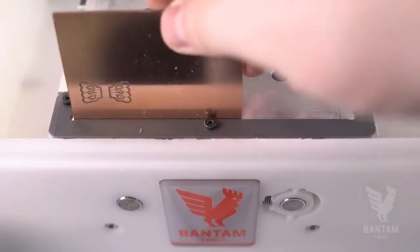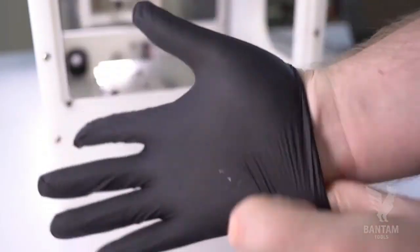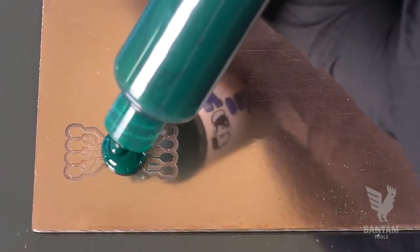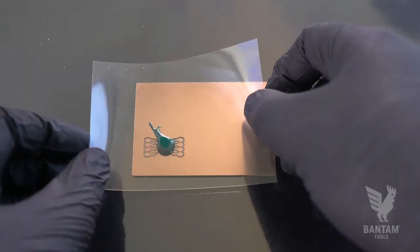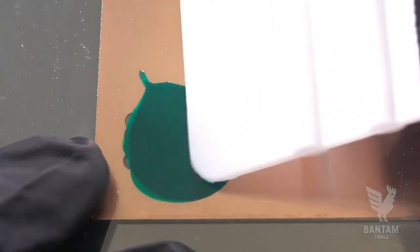With the traces done, go ahead and remove the PCB from the mill, put on a pair of nitrile gloves, and place a small amount of the solder mask resin on the board. Cover it with a plastic sheet and gently push the resin into place.